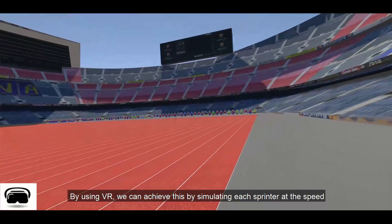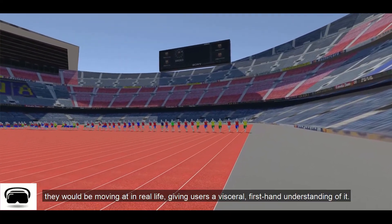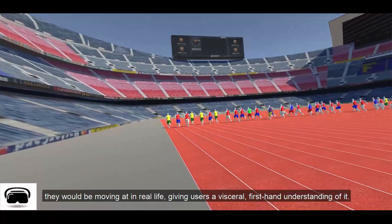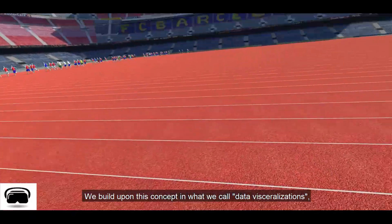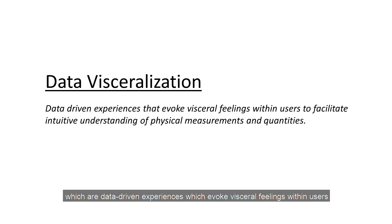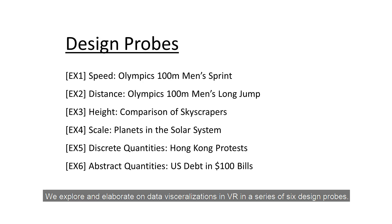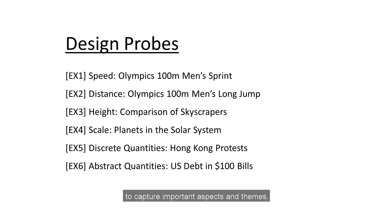By using VR, we can achieve this by simulating each sprinter at the speed they would be moving at in real life, giving users a visceral, first-hand understanding of it. We build upon this concept in what we call data visceralizations, which are data-driven experiences that evoke visceral feelings within users to facilitate intuitive understanding of physical measurements and quantities. We explore and elaborate on data visceralizations in VR in a series of six design probes, which are VR prototypes based on real-life examples that we critically evaluated to capture important aspects and themes.